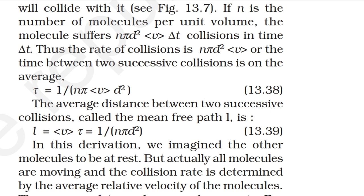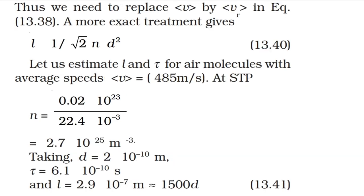The rate of collisions is n·π·d²·v̄, so the time between two successive collisions on average is τ = 1/(n·π·v̄·d²). The average distance between two successive collisions is the mean free path: L = v̄·τ = 1/(n·π·d²). In this derivation we imagined the other molecules to be at rest, but actually all molecules are moving and the collision rate is determined by the average relative velocity. A more exact treatment gives L = 1/(√2·n·π·d²).